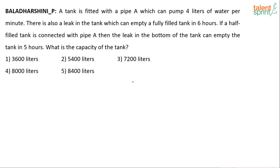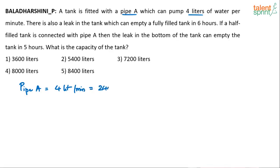This question can actually be solved without putting pen and paper. Pipe A can pump 4 liters per minute, which is nothing but 240 liters per hour — 4 liters per minute means in 60 minutes, 4 into 60 equals 240 liters. So pipe A can fill 240 liters per hour every hour.